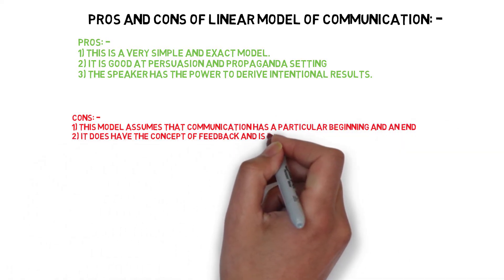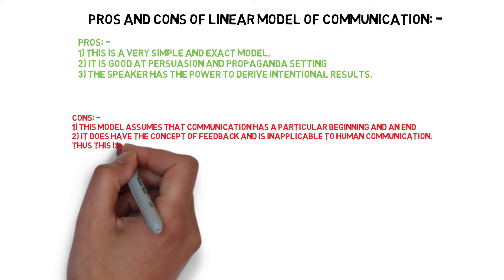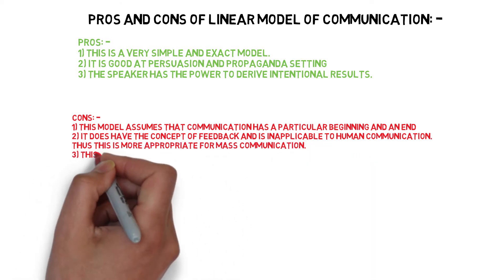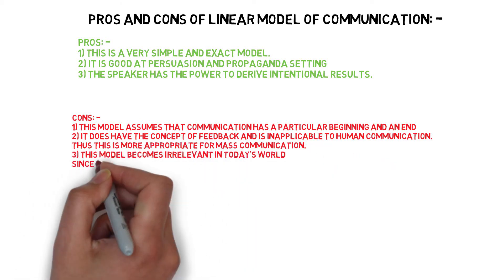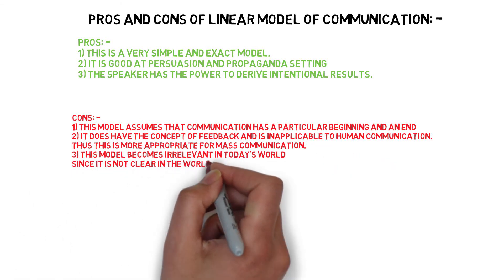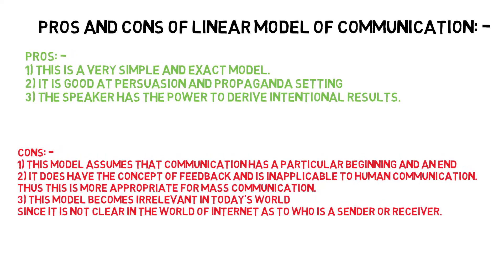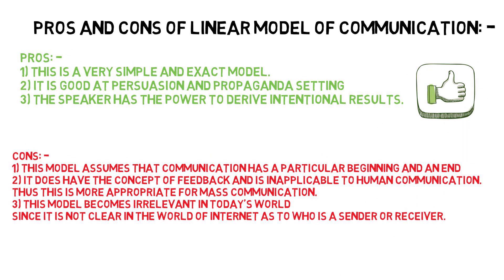Cons: one, this model assumes that communication has a particular beginning and an end; two, it does not have the concept of feedback and is incapable of human communication — thus it is more appropriate for mass communication; three, this model becomes irrelevant in today's world since in the internet age it is not clear who is the sender or the receiver.